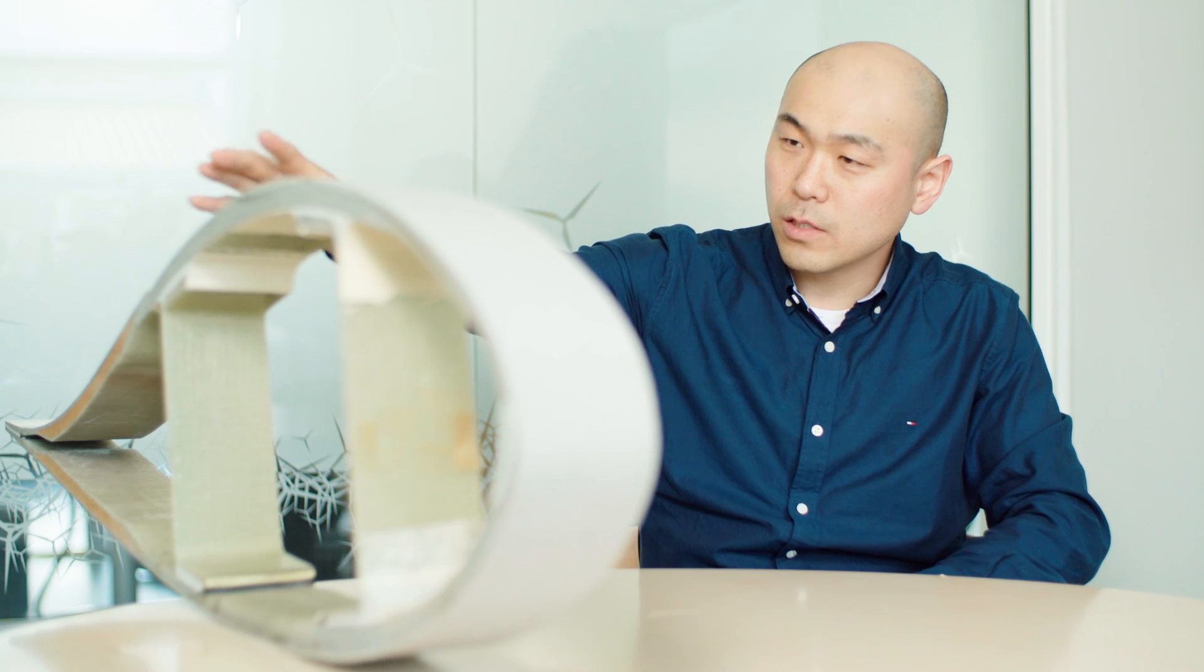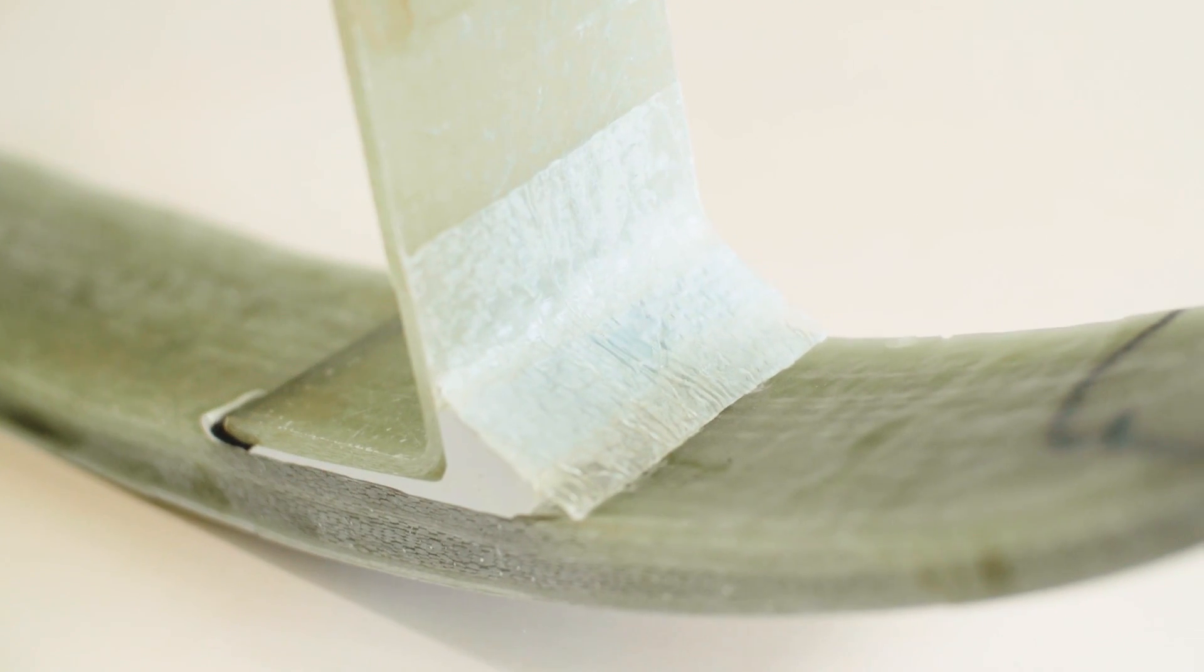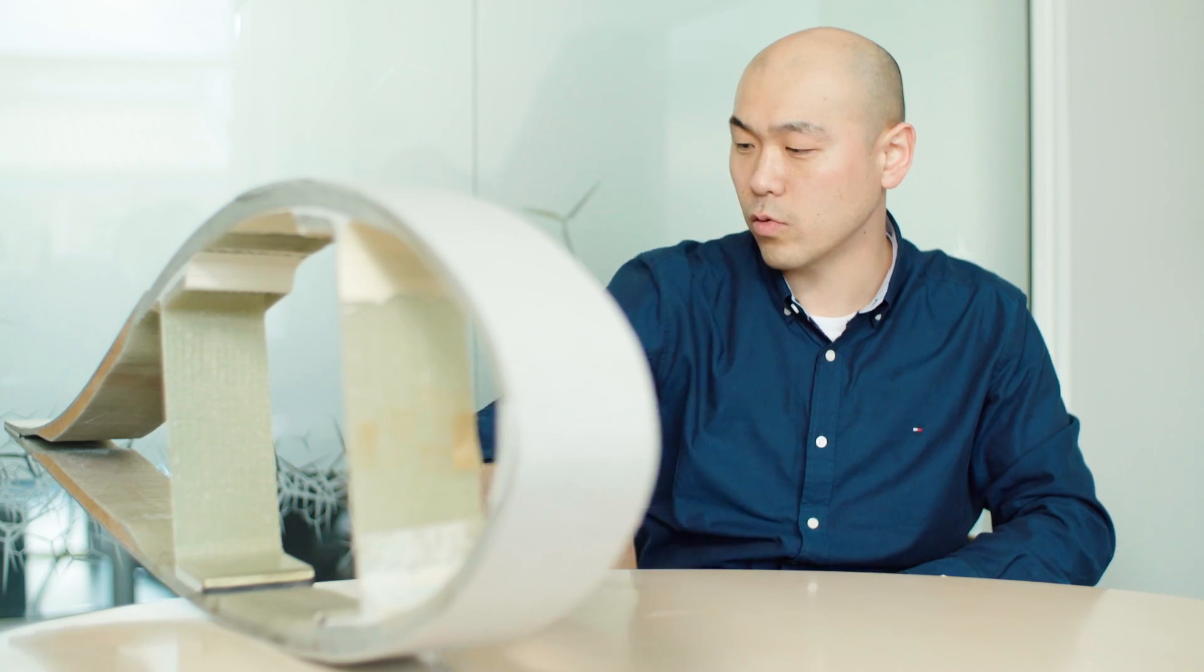In general, a wind turbine blade looks like this, as you can see here. This one is made by composite material with this aerodynamic shell.